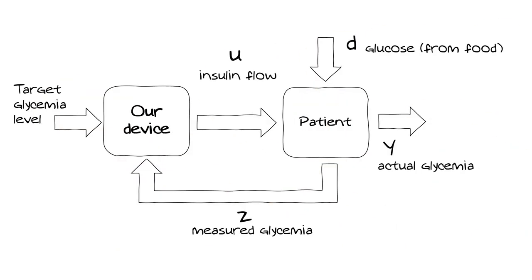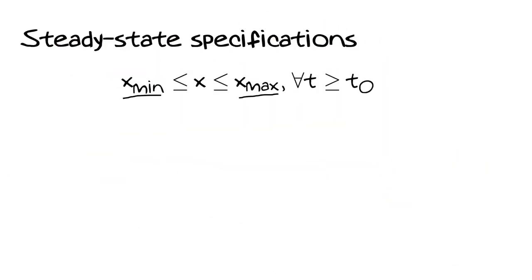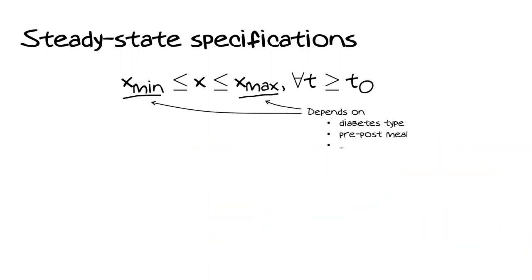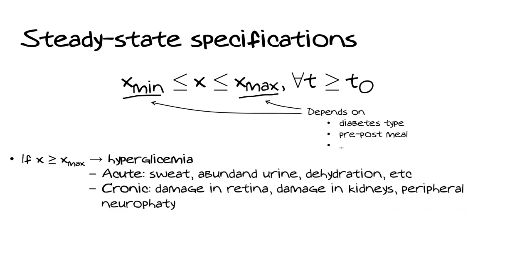We are ready to formalize our control problem. We close the loop to obtain the classic control theory scheme, then specify transient and steady-state specifications. Regarding steady-state specification, all we want is to keep the glycemia — our state X — within certain bounds. We denote with T0 the time instant when the patient has been diagnosed with diabetes. The bounds X-min and X-max depend on the diabetes type and the time of day. If glycemia goes above X-max, the patient is in hyperglycemia; our device shall release insulin to lower blood glucose.